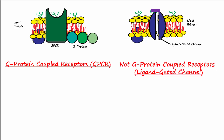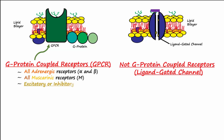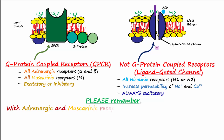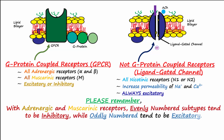All adrenergic receptors as well as all muscarinic receptors are G protein-coupled receptors, which allows them to be either excitatory or inhibitory. In contrast, nicotinic receptors are not G protein-coupled receptors; their activation increases permeability to sodium or calcium in postganglionic neurons or skeletal muscles, so they are always excitatory. Remember: evenly numbered adrenergic and muscarinic receptors tend to be inhibitory, oddly numbered tend to be excitatory, and nicotinic receptors are always excitatory regardless of subtype.